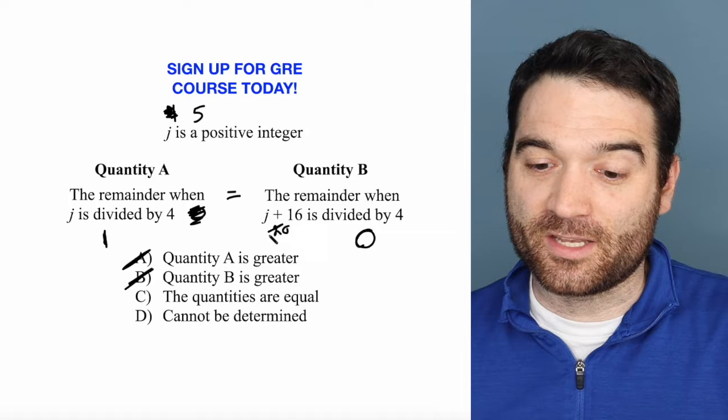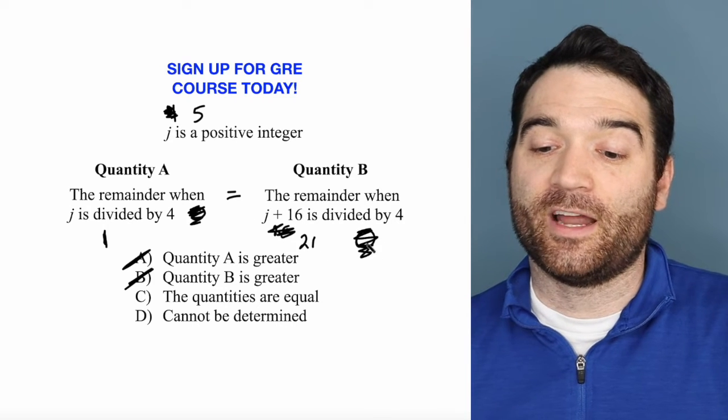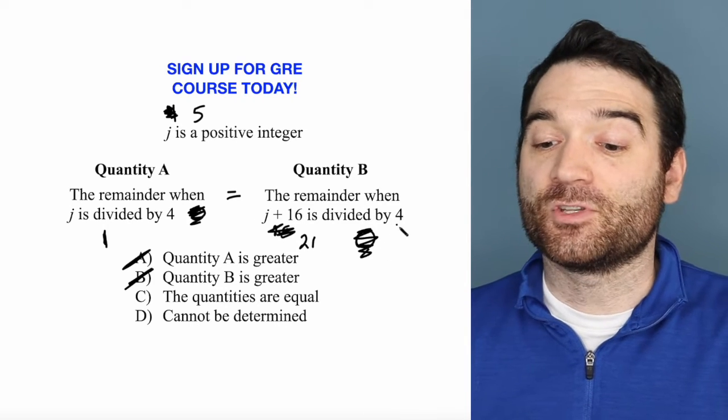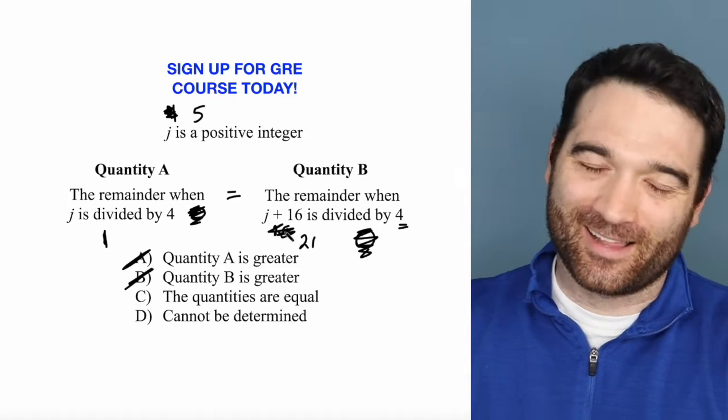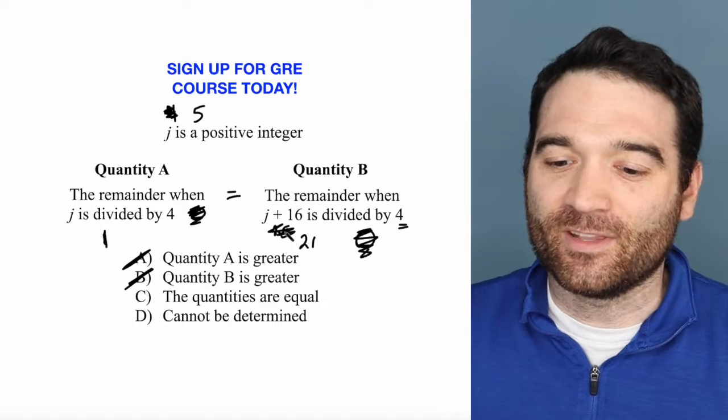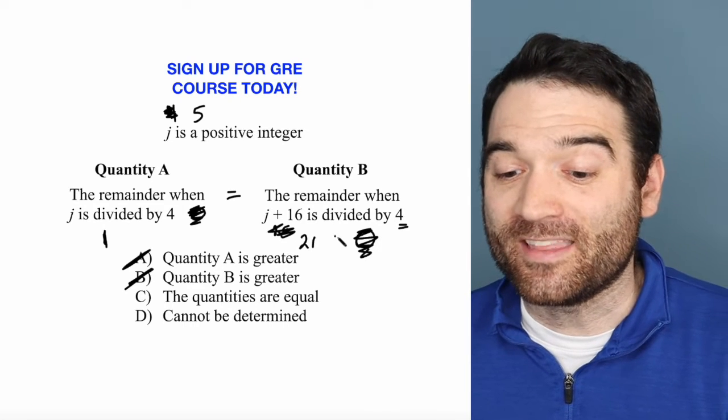So we'll just keep going with this. J plus 16, 5 plus 16 is 21 divided by 4. What happens when you do that? Well, how many times does 4 go completely into 21? It goes in 5 times, right? So 21 cards. I like this analogy. You deal out everybody evenly. Everybody gets 5 cards, and there's 1 left over. So once again, these are equal.